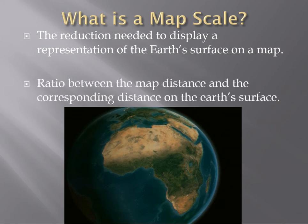The actual definition is that it's a ratio between map distance and the corresponding distance on the earth's surface. So the distance between two points on the map has to relate to the distance on the earth's surface, and it gives us this nice ratio.